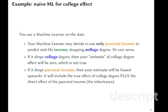So when you use a machine learner on this data, the machine learner may decide to use only parental income to predict midlife income and drop college degree, or vice versa using college to predict midlife income and dropping parental income. If it drops college degree, then your estimate of college degree effect, that naive estimate using machine learning predictions, will be zero, which is not true. There is some effect of college on your midlife income.